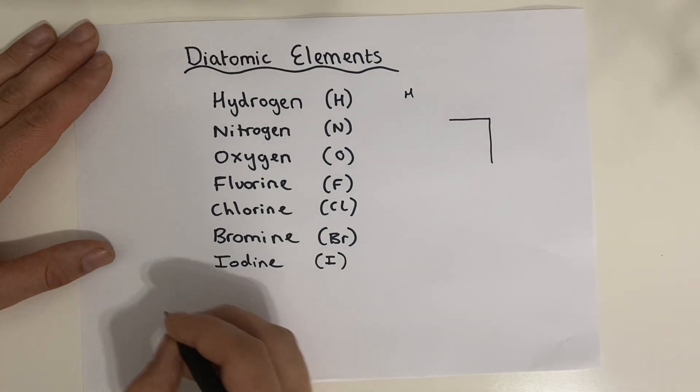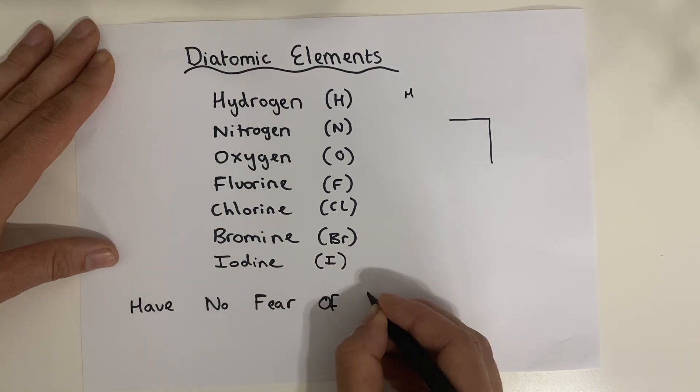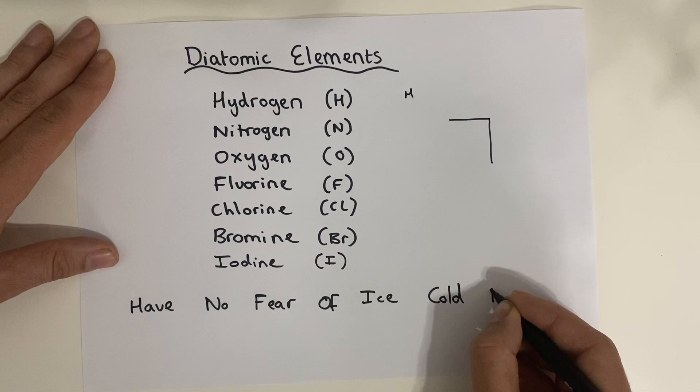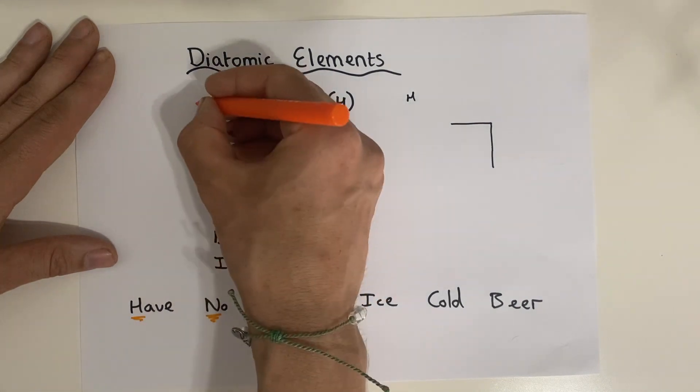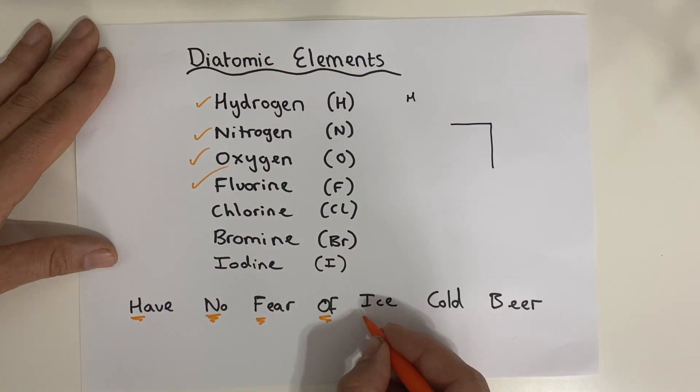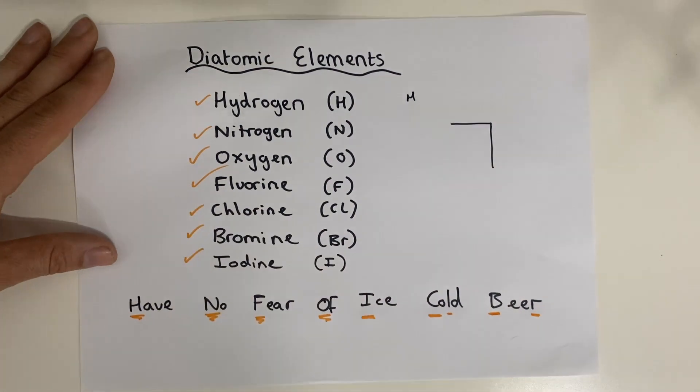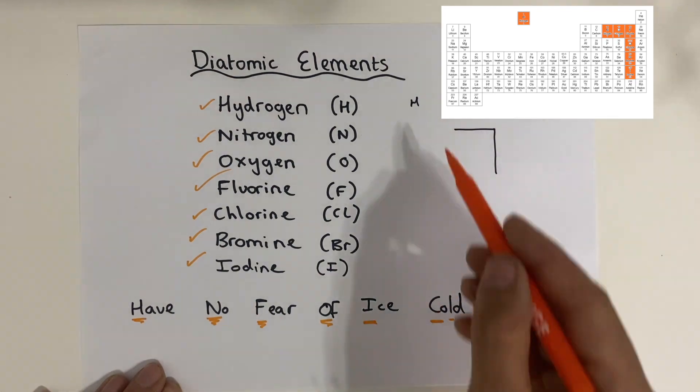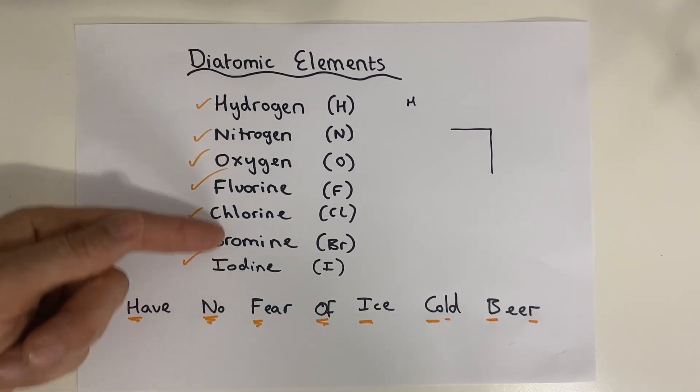Another way you can remember them is by using the phrase 'we have no fear of ice cold beer.' Some of the letters correspond to the symbols of the diatomic elements. So we have H corresponds to hydrogen, N corresponds to nitrogen, F for fluorine, O for oxygen, I for iodine. It's not C for carbon, but it's Cl for chlorine. And it's not B for boron, but it's Br for bromine. So that's another way of remembering it. Either their position in the periodic table is an L shape plus hydrogen, or have no fear of ice cold beer. And to be honest, the more of these equations you write, you'll just become familiar with these being the diatomic elements.